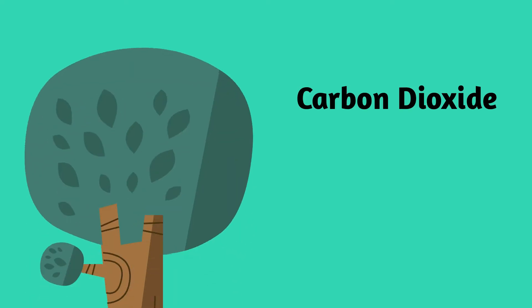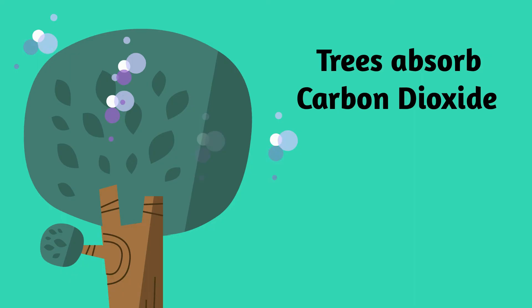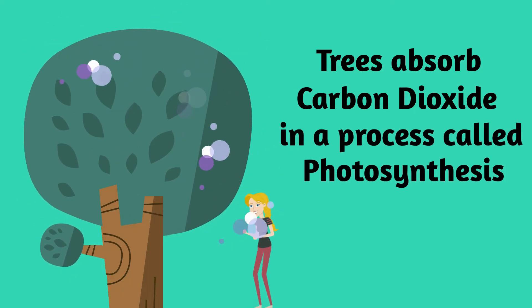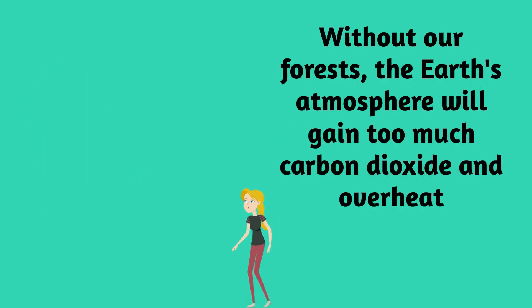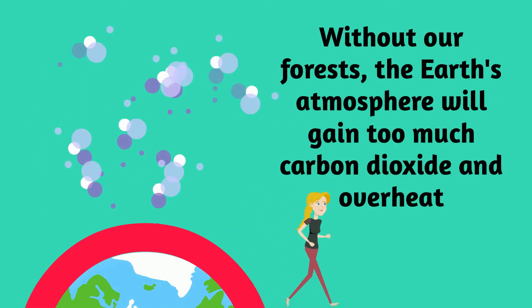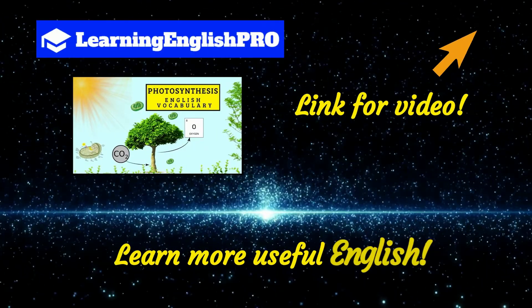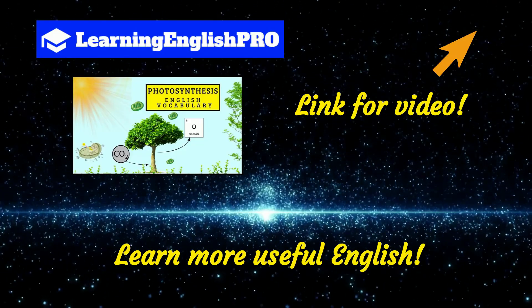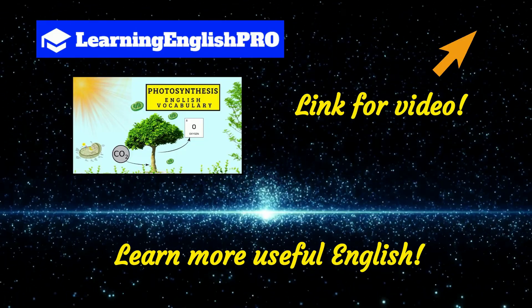But why is deforestation contributing to climate change and global warming? Trees absorb carbon dioxide in a process we call photosynthesis. Without our forests, the earth's atmosphere will gain too much carbon dioxide and overheat. If you want to learn more about photosynthesis in English, check out my video on my YouTube channel — the link is on the screen right now.